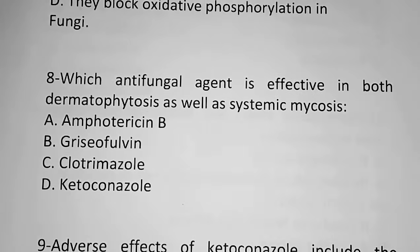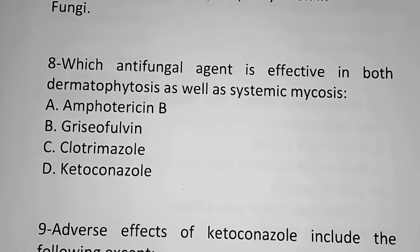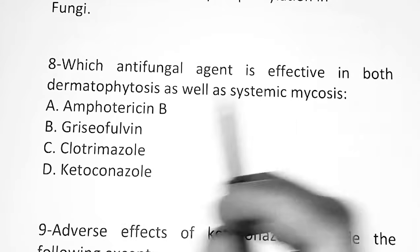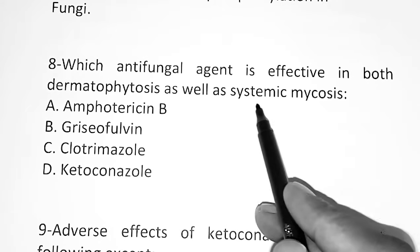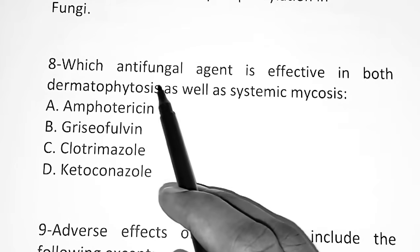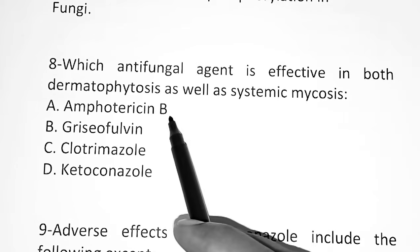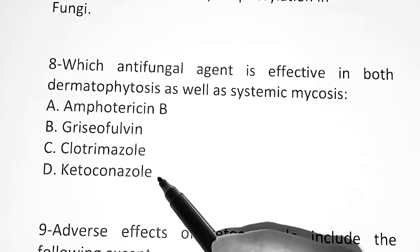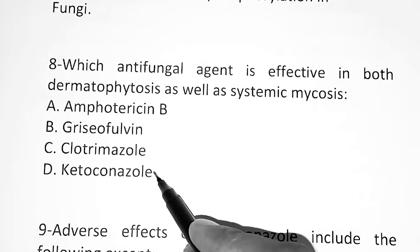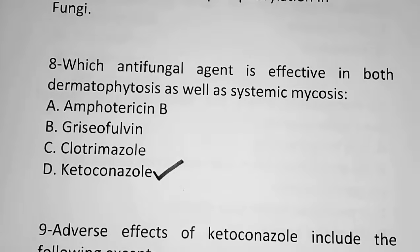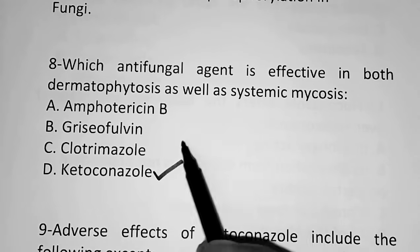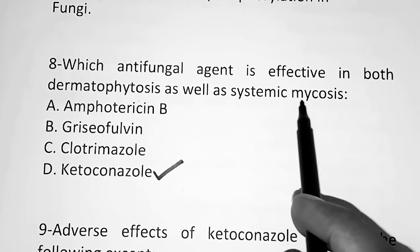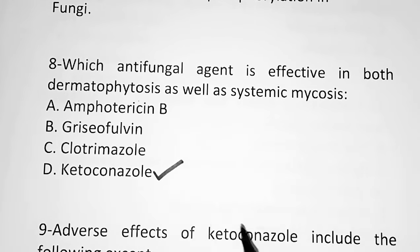The eighth question: Which antifungal agent is effective in both dermatophytosis as well as systemic mycosis? Option A, Amphotericin B. Option B, griseofulvin. Option C, clotrimazole. Option D, ketoconazole. Ketoconazole is the correct answer — it is effective in both dermatophytosis as well as systemic mycosis.